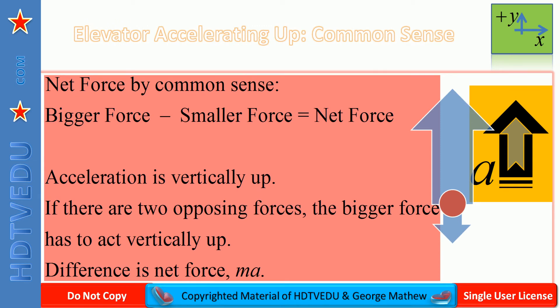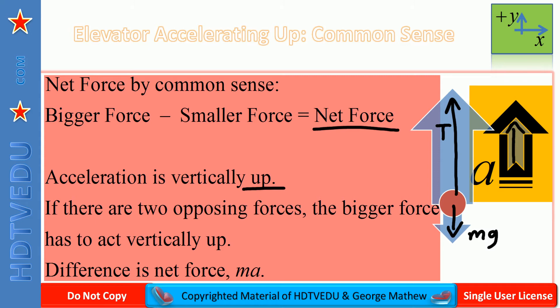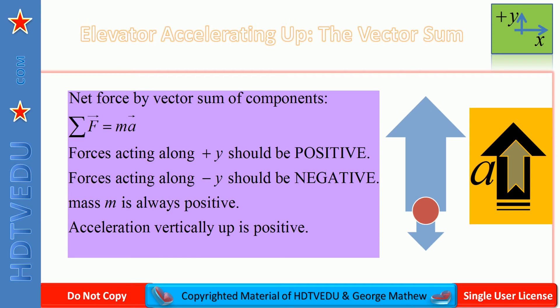By common sense: bigger force minus smaller force equals net force. Since acceleration is vertically up, the bigger force must act vertically up — that is tension. Tension is up, gravitational force is down; those two forces are in opposite directions, so the net force is their difference. Therefore: T minus mg equals ma.